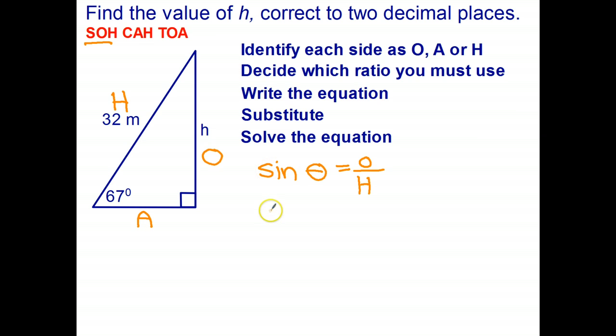Okay now let's substitute everything that we know. So we get sine of the angle is 67 degrees. The opposite side is the letter H, we don't know its length, and the hypotenuse is 32. Now we can solve this little equation quite easily. H is divided by 32. So we need to multiply by 32 and we need to multiply by 32. The 32s divide out.